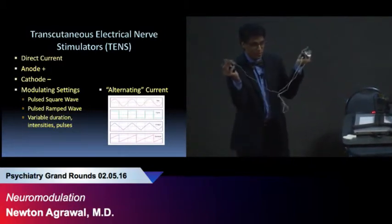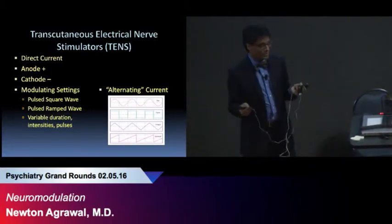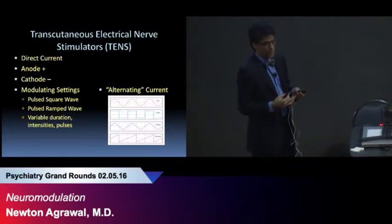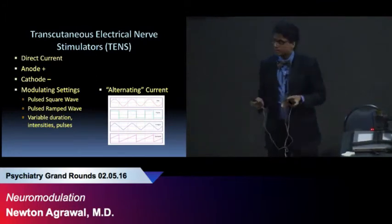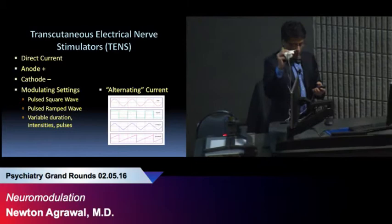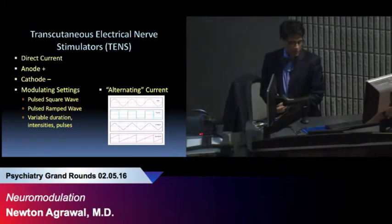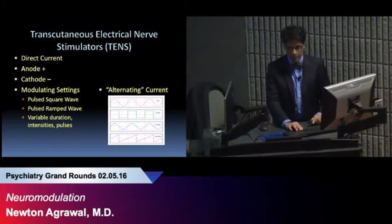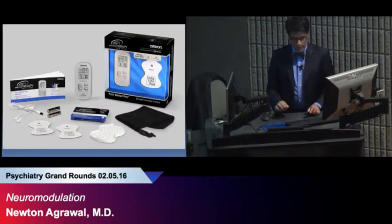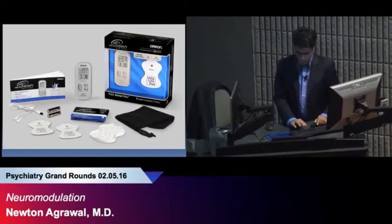Basically, what that is is it's providing a pulse of electricity. It can involve square waves or ramp waves. So you can take one of these, buy it from the drugstore, and slap it on your head. You can actually feel what this feels like. But the advantage of this unit is it's actually got alternating current. It's actually more sophisticated, but the research for TACS isn't as evolved as for TDCS.